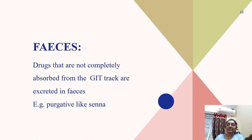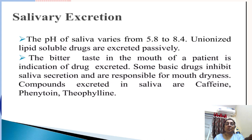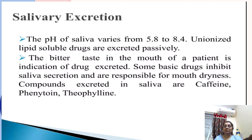Fecal route: drugs not completely absorbed from the gastrointestinal tract are excreted in feces, such as purgatives and laxatives. Salivary excretion: the pH of saliva varies from 5.8 to 8.4. Unionized, lipid-soluble drugs are excreted passively. A bitter taste in the mouth indicates drug excretion. Some basic drugs inhibit saliva secretion and cause mouth dryness. Compounds excreted in saliva include caffeine, phenytoin, theophylline, and metronidazole, which can alter the taste of the mouth.